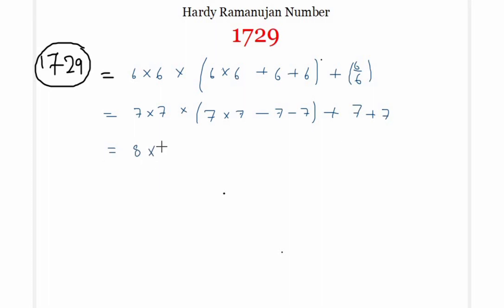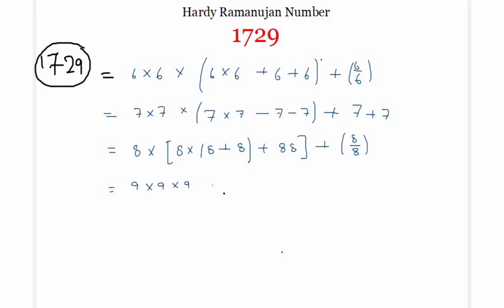Similarly, we can write 1729 using all 8s: 8 × 8 × 8 + 8 + 88 + 8/8. And finally, 1729 represented using only 9s: 9 × 9 × 9 + 99 + 9/9. All these representations contain only the digit 1, or 2, or 3, or 4, and so on up to 8 and 9 — these are the respective representations of 1729 using each single digit.